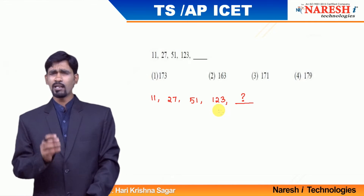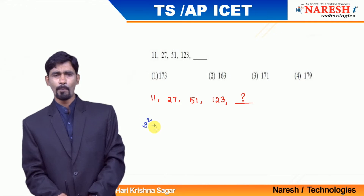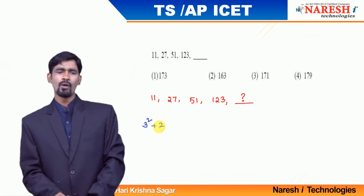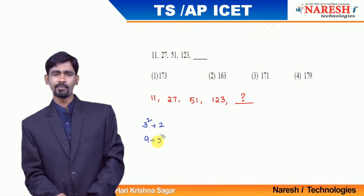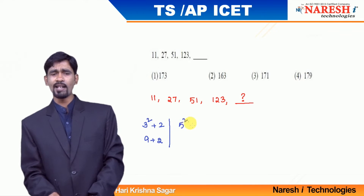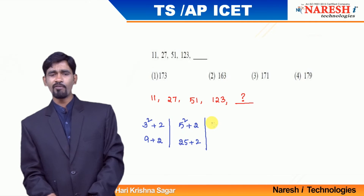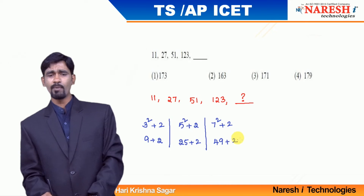I am trying to observe: 11 — can I write this as 3 squared plus 2? 3 squared is 9, and 9 plus 2 is 11. What is 27? 27 can be written as 5 squared plus 2, because 5 squared is 25, and 25 plus 2 is 27. What is 51? 51 can be written as 7 squared plus 2. 7 squared is 49, and 49 plus 2 is 51.